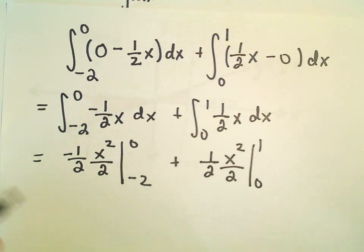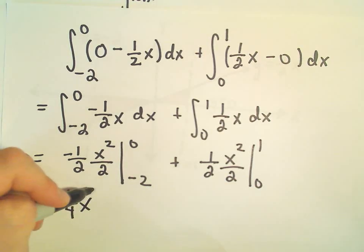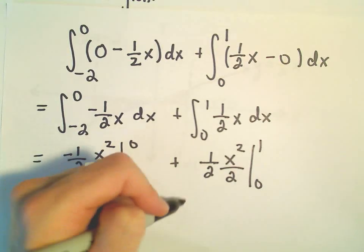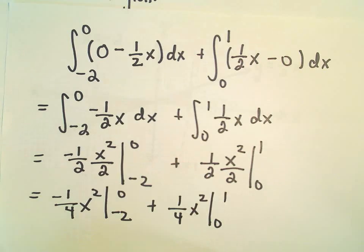I think we can go ahead and simplify everything at once. We've got negative 1 fourth times x squared from negative 2 to 0 plus 1 fourth x squared from 0 to 1.